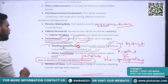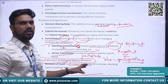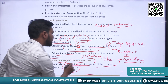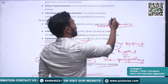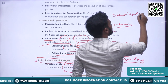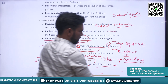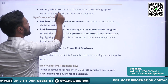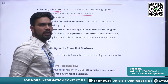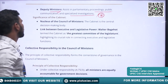Regarding the role of Ministers of State and Deputy Ministers: Ministers of State hold independent charge sometimes, and at other times assist cabinet ministers. They do not attend all cabinet meetings — they attend as and when required. Cabinet meetings are attended only by cabinet rank ministers. Deputy Ministers assist with parliamentary proceedings, public communication, and specialized investigations.